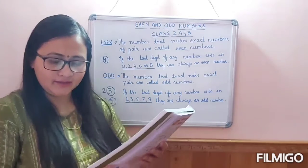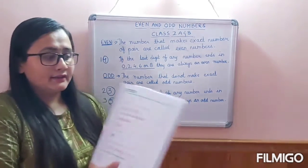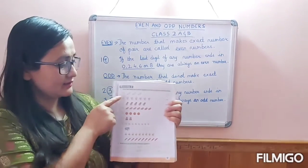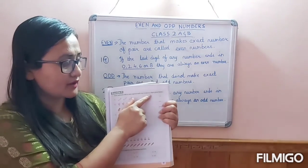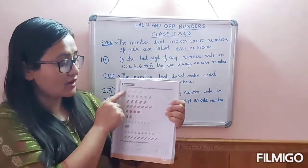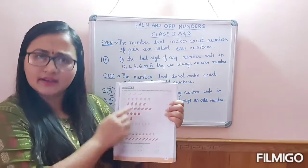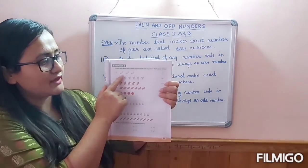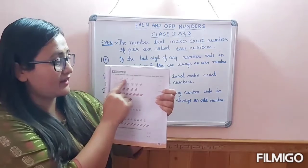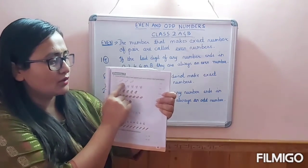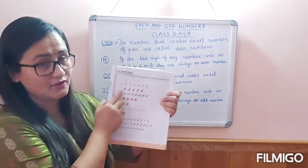Now move on to the exercises. You can turn to page number 43. Count and write odd and even numbers against each row in the picture chart given below. So you have to count and write whether they are an odd number or an even number. In the first picture, there are 3 chocolates — 1, 2, 3. If I pair them in twos, 2 are paired and 1 is left. So it is an odd number. This one has been done for you in your book.